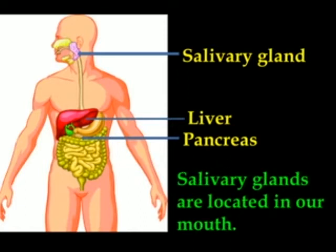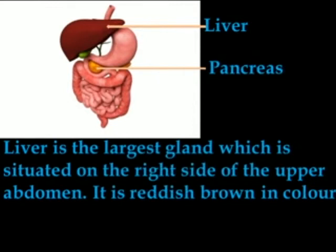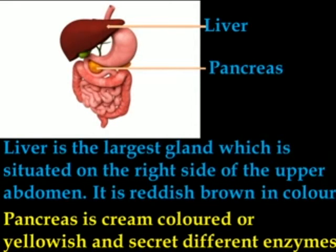Salivary glands are located in our mouth and secrete saliva. The secretions of all the glands are necessary for digestion. The liver is the largest gland, situated on the right side of the upper abdomen. It is reddish-brown in color and secretes bile. The pancreas is cream-colored or yellowish and secretes different enzymes which are necessary for digestion.